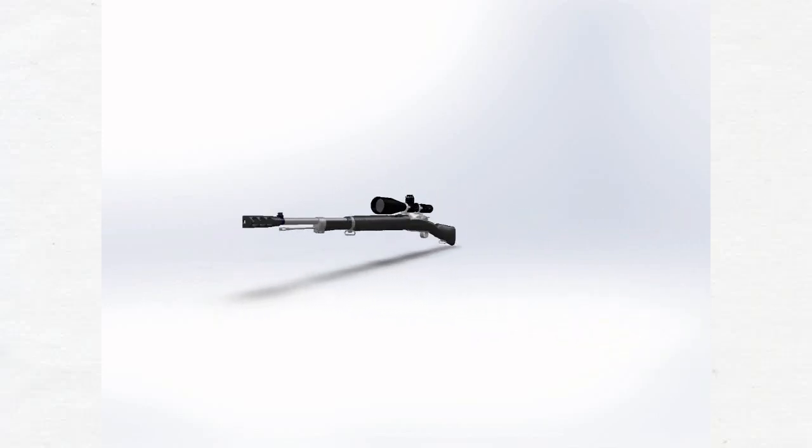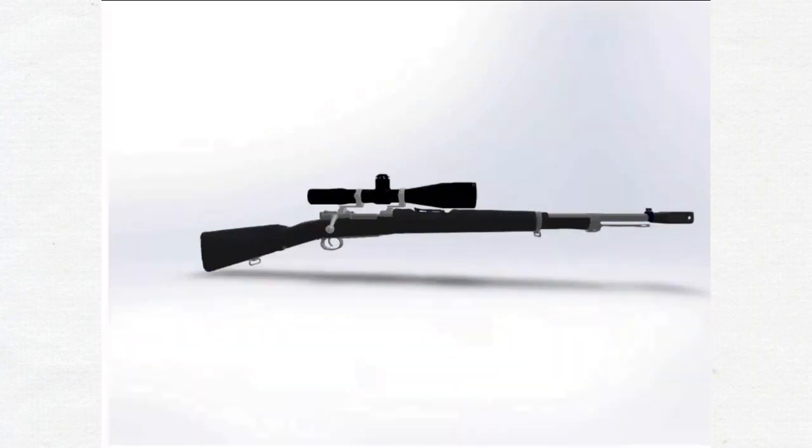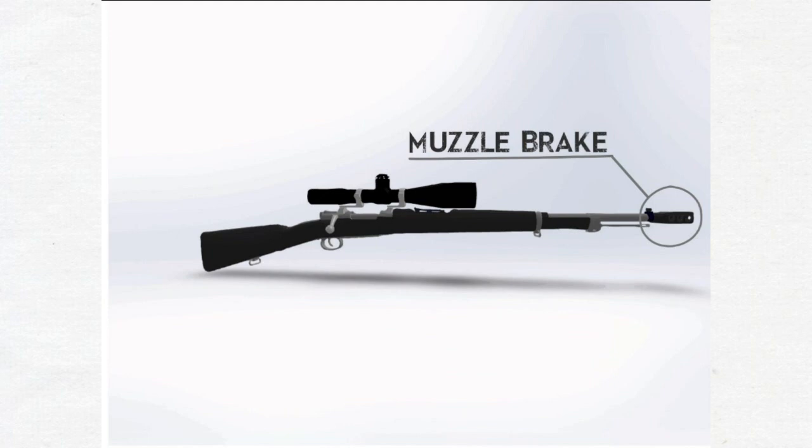Muzzle brake, also known as recoil compensator, is a device connected to the muzzle or barrel end of a firearm or cannon that redirects propellant gases to counter recoil and unwanted rising of barrel during rapid fire.